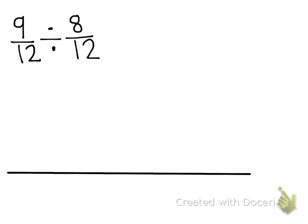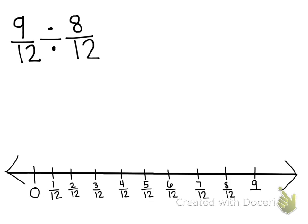I'm going to show you the exact same problem with the number line. So here we go: 9 twelfths divided by 8 twelfths. And I'm going to draw the number line and partition it. We're going to go all the way to 9 twelfths.